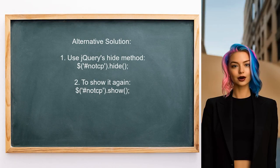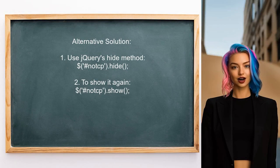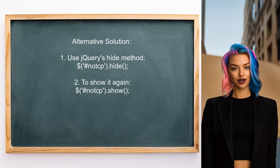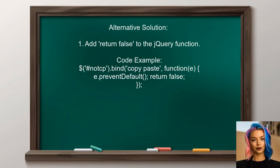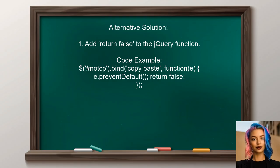Another alternative suggested by a user is to use jQuery's hide method. By hiding the element you want to protect from copying, you can prevent it from being selected. To hide the element, use the command `.not-cp .hide`. When you want to show it again, use `.cp .show`. Additionally, another user suggests adding return false to the jQuery function — this ensures that the copy and paste actions are completely prevented for the specified element.